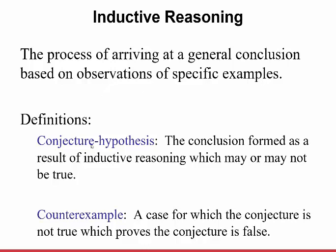Here's an example of a conjecture hypothesis. Say the last two days I've gotten up at 8 a.m. So my conclusion by inductive reasoning is that since Matt's gotten up at 8 a.m. the last two days, Matt must get up at 8 a.m. every day. But you can see the fault with that — we can talk about a counterexample. This is a case for which the conjecture is not true, which proves it false. Like three days ago I got up at 9 a.m., so that's a counterexample that proves this false. Inductive reasoning is just based on a few specific examples.